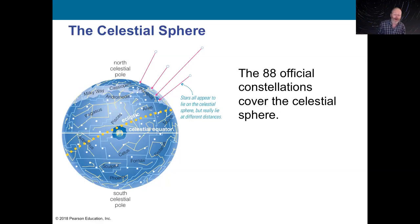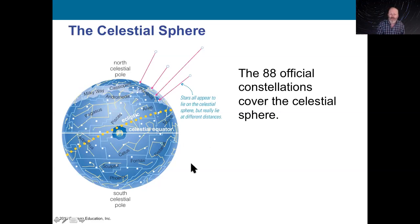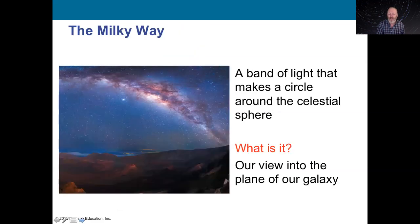Memorizing constellations is not that hard. If you went out once a week and memorized one or two, by the end of the year you'd have seen all the ones we can see. The Big Dipper, Little Dipper, and Cassiopeia you can see every night. But some change with season — Aquarius, Pisces, Aries, Taurus. Where have you heard those? If you look up your horoscope, that's where. Those change depending on our position around the sun.